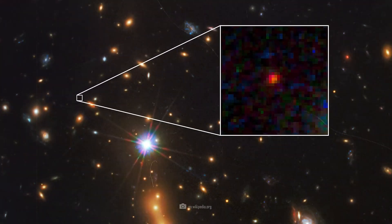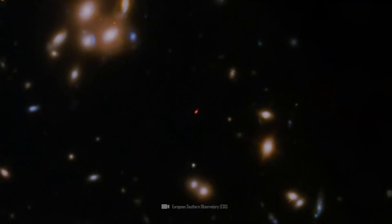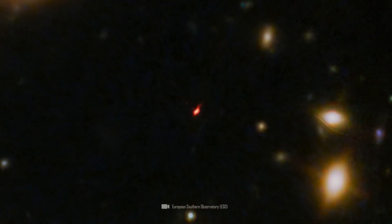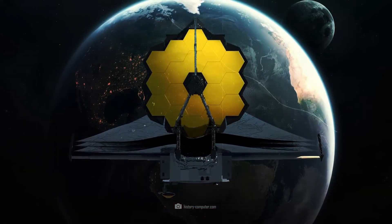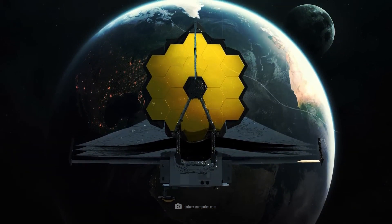Another important example is Mach S0647-JD, a galaxy discovered in an early galaxy cluster. This galaxy is extremely faint and is in a very early phase of the universe.